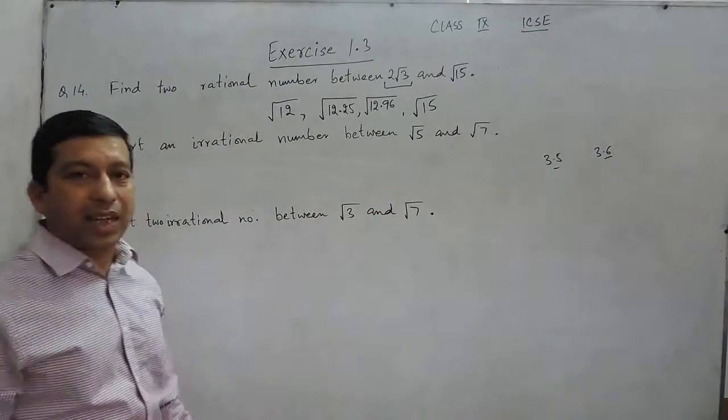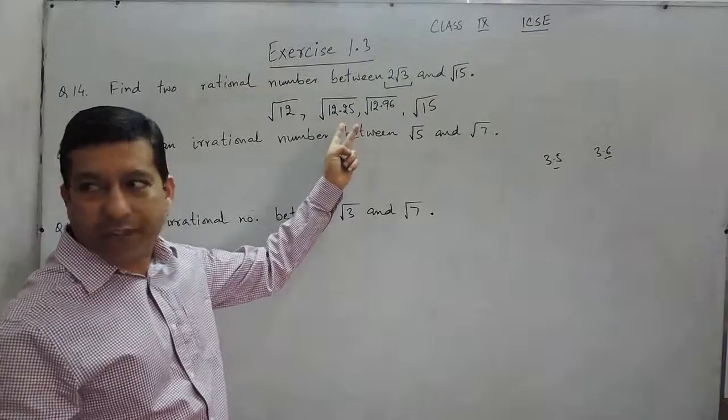If the question would be find two irrational numbers, so instead of 12.25, which is a perfect square, I can write 12.23...